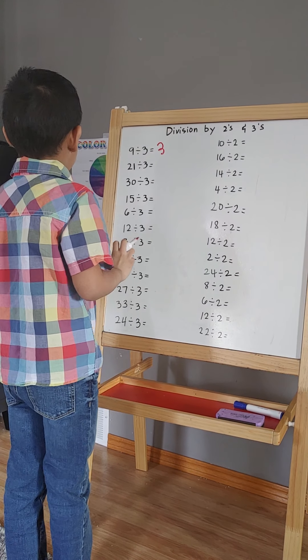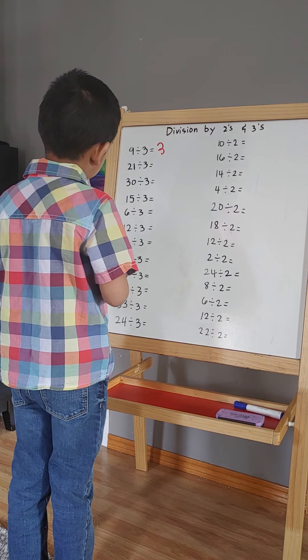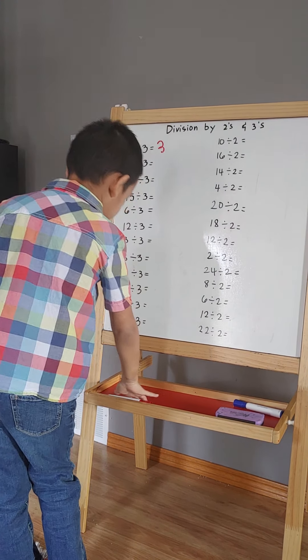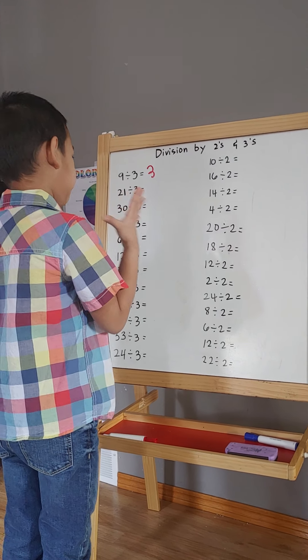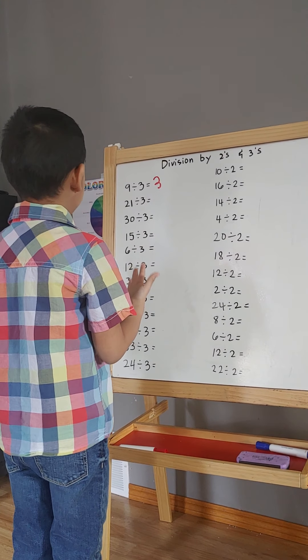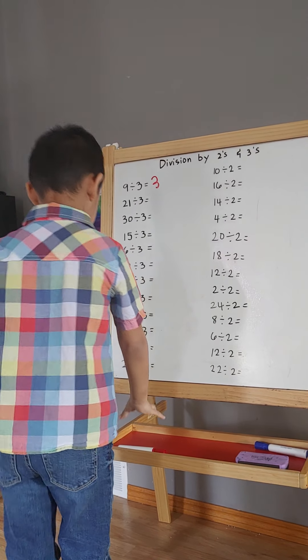21 divided by 3. 3, 6, 9, 12, 15, 18, 21.